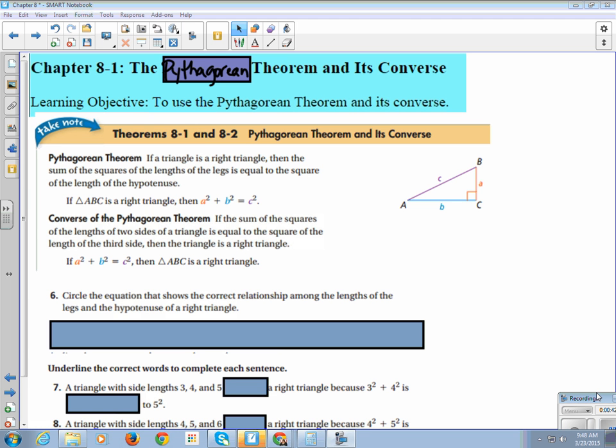The converse says if the sum of the squares of two sides of a triangle is equal to the square of the length of the third side, then it is a right triangle. So you can use Pythagorean Theorem to prove your triangles are right triangles. If you apply the Pythagorean Theorem and get a true statement, then you can say it is definitely a right triangle.